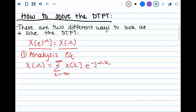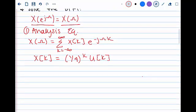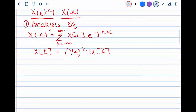First, we must know the sequence that we are trying to solve. Our sequence is X[K] equals (1/4)^K times the unit step of K. The first step is to plug in our X[K] into the analysis equation as shown.